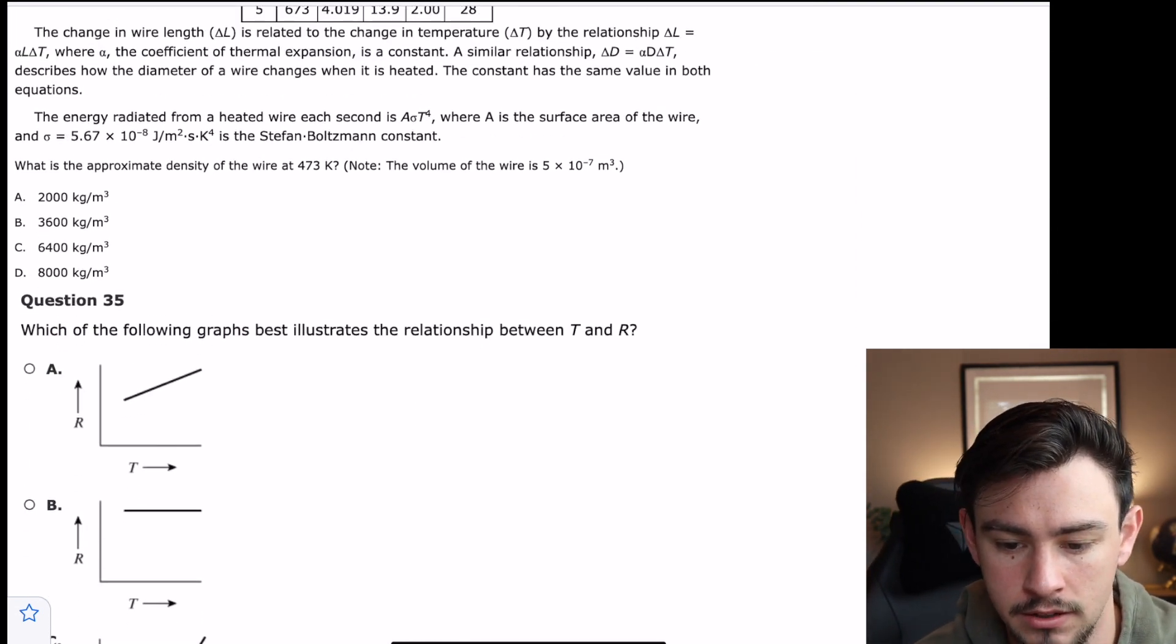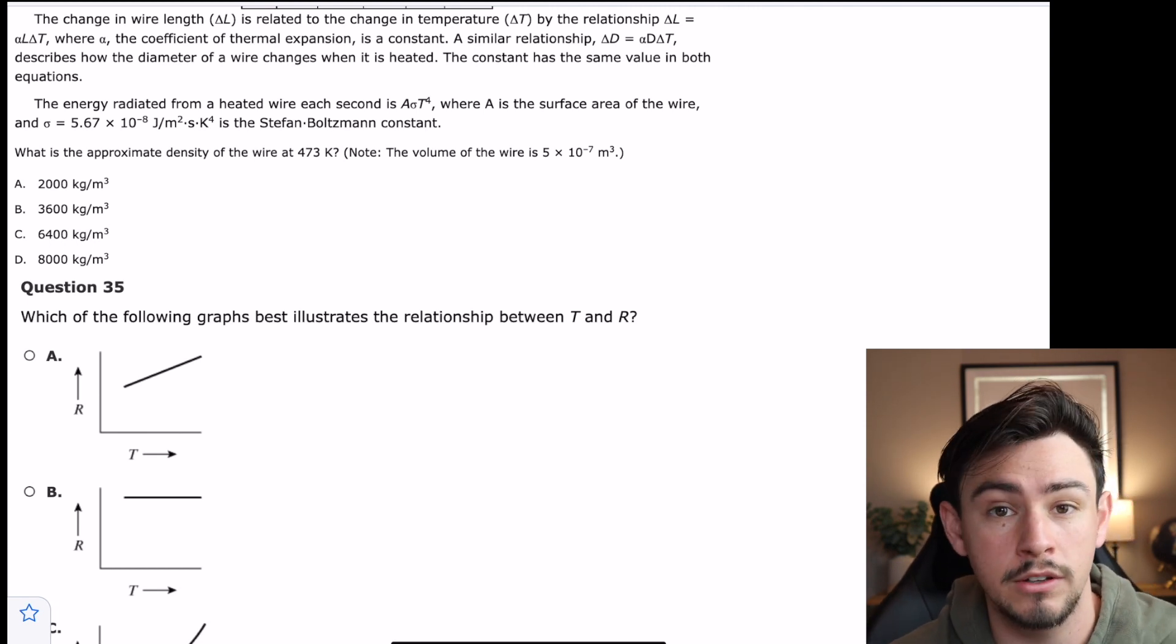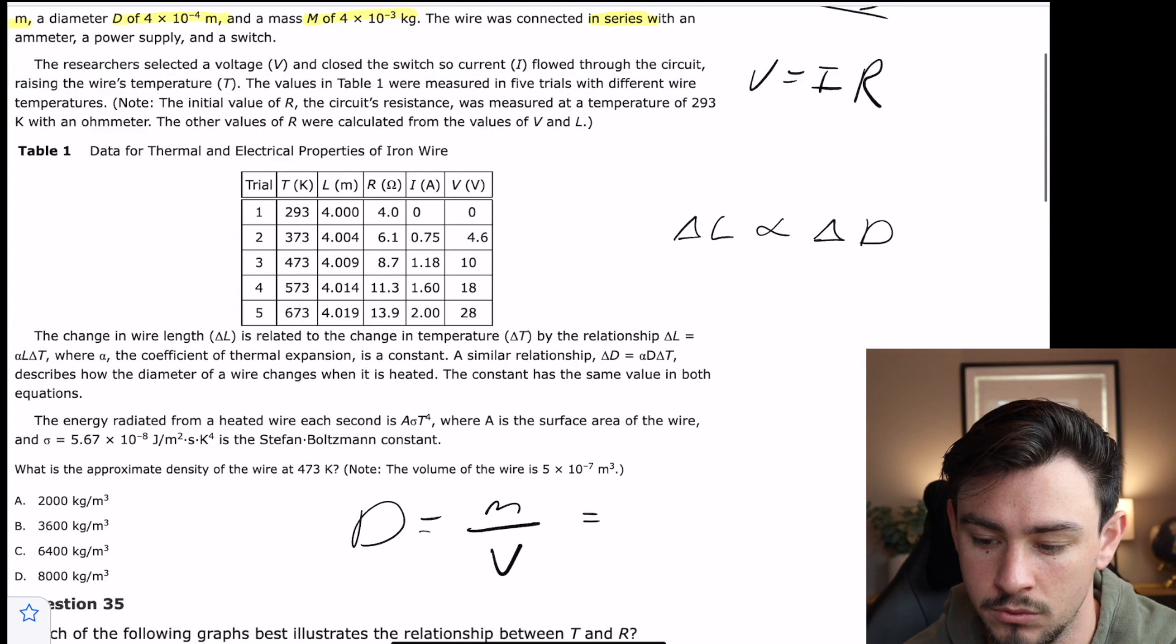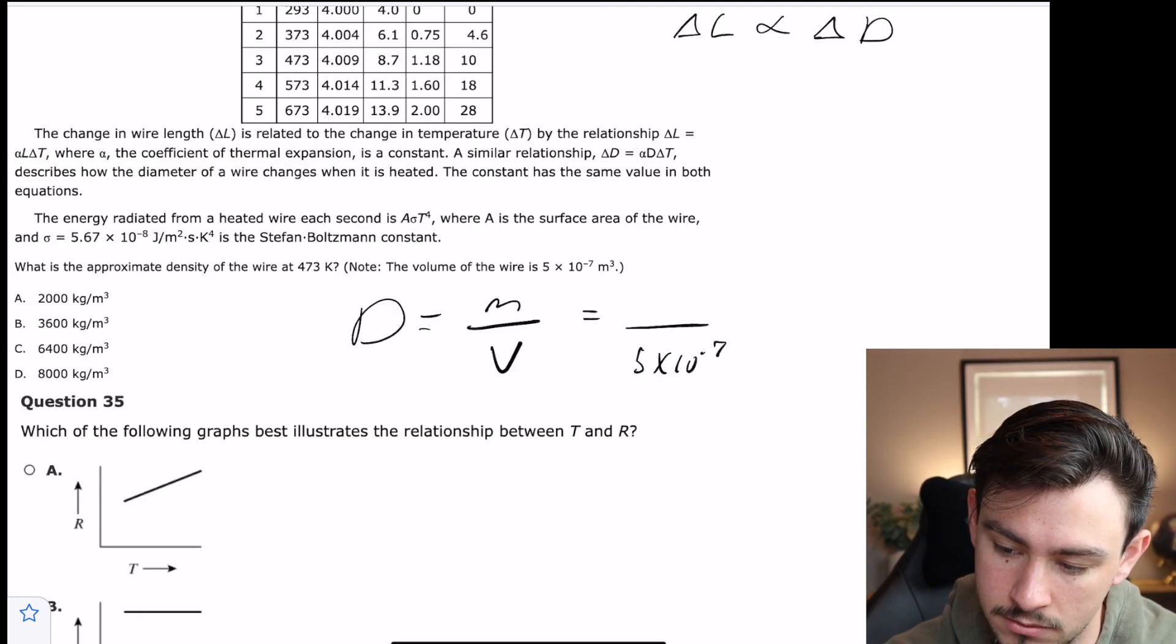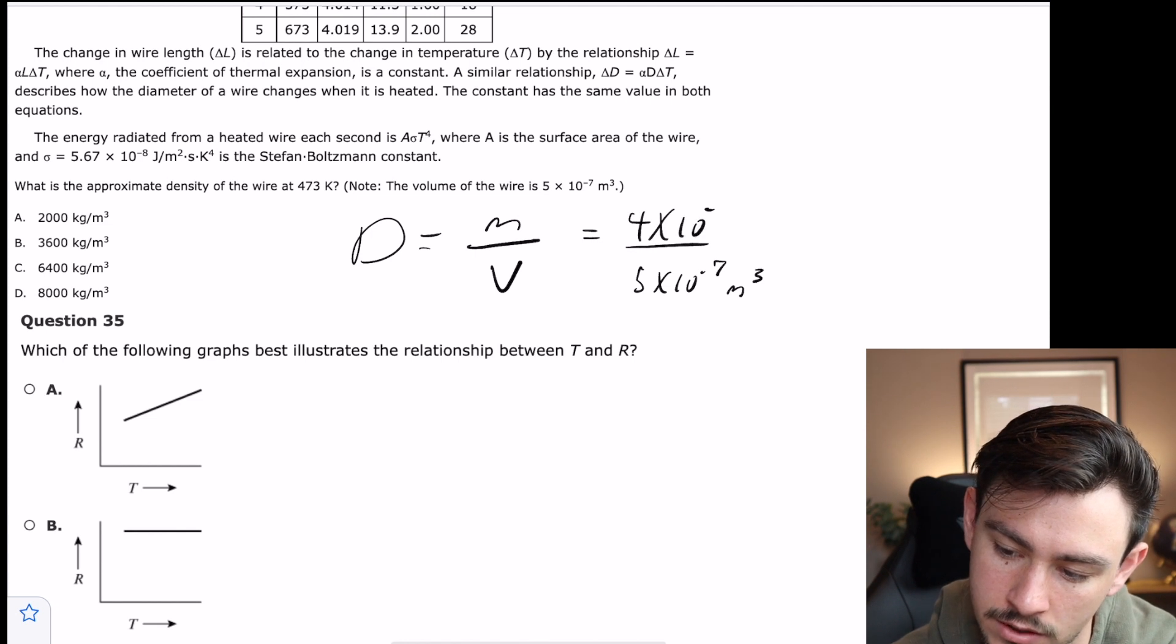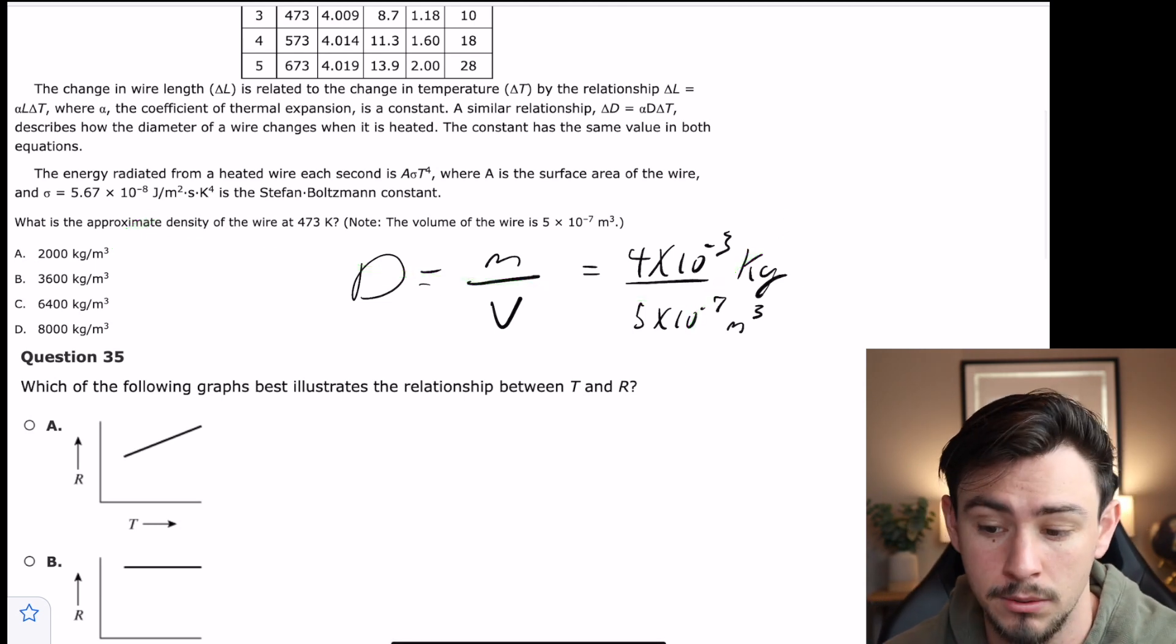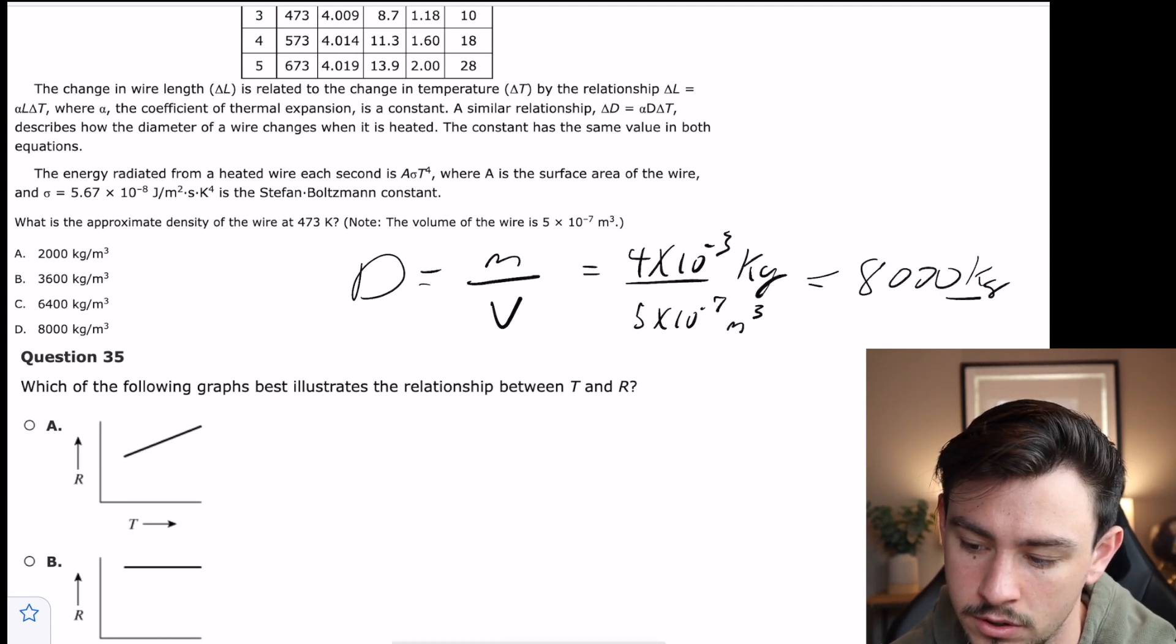Number 34 says, what is the approximate density of the wire at 473 Kelvin? And then it gives us the volume of the wire. So this is a question that if you know the equation for density, you get it right. Density is equal to mass over volume, D equals M over V. And so now we just, we have our volume, right? They gave it to us here. So let's plug that in: 5 times 10 to the negative 7 meters cubed. And then let's grab our mass, which is here: 4 times 10 to the negative third kilograms. Make sure that in your math you have the same units as your actual answer because they can trick you there. And now you're just straight up calculating it.